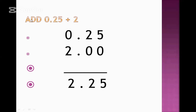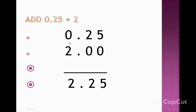Now we have another question: 0.25 added to the whole number 2. First, we write 0.25. Then we write 2 underneath. After the point we have two digits, so we write two zeros after the decimal point for the whole number: 2.00. Now we add: 5 plus 0 equals 5, 2 plus 0 equals 2, and 0 plus 2 equals 2. The result is 2.25.